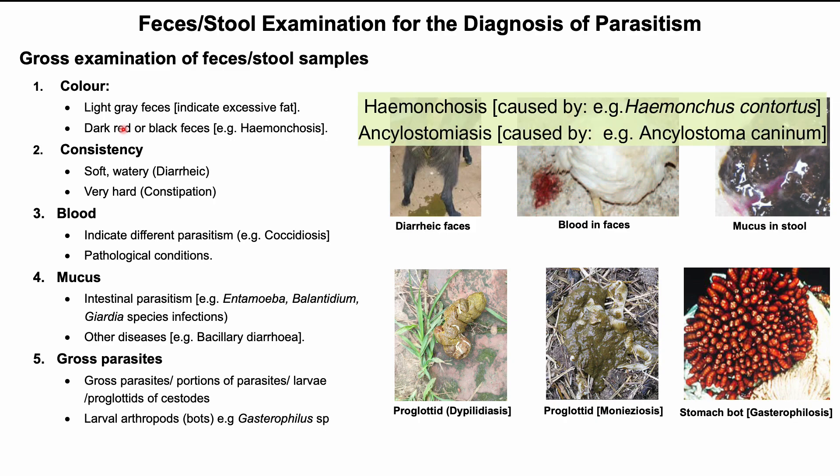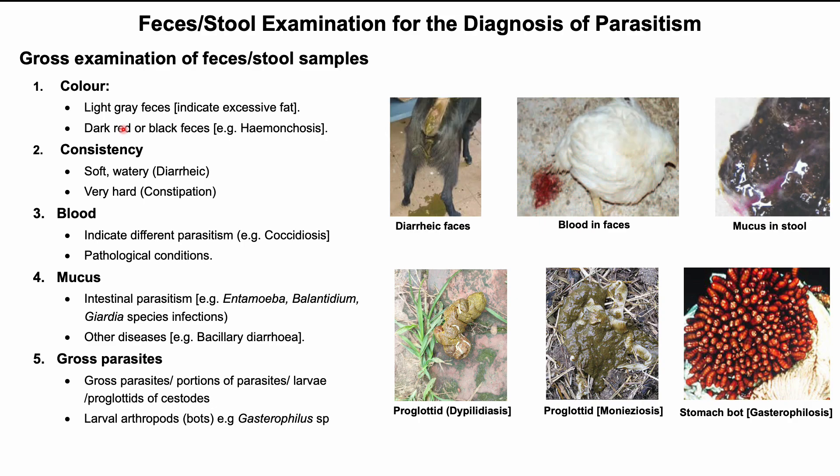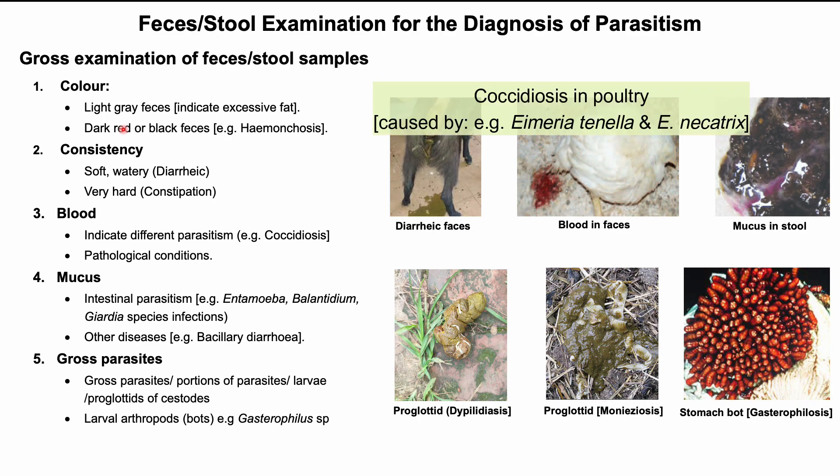For example, dark feces can be seen in haemonchosis, ancylostomiasis, etc. Whitish feces is seen in salmonellosis. Tarry color feces is observed in coccidiosis.